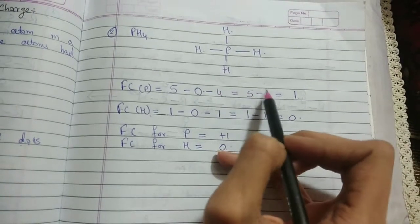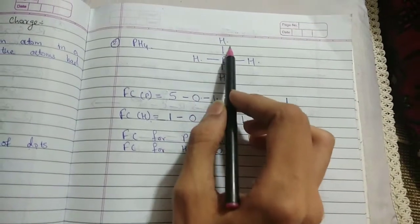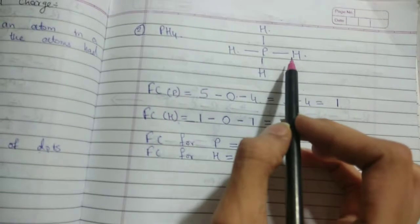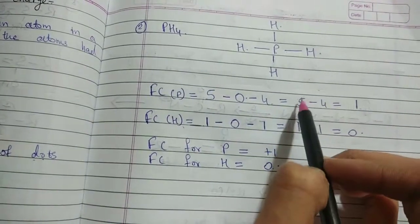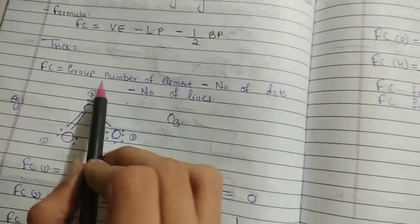So, we write 4 over there. So, we get 1 that is 5 minus 4 is 1. Now, there are 4 hydrogens but all of them are equivalent. So, we need not find the formal charge for each. So, we just have to find for a single hydrogen atom. So, let us start by doing that.